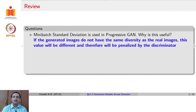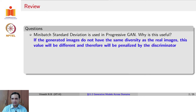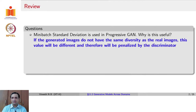The answer is: in mini-batch standard deviation, the standard deviation at each spatial location in a feature map across a mini-batch is concatenated in a later layer of a discriminator. The standard deviation gives an idea of the diversity of the images generated in a given mini-batch. If this diversity is significantly different from the diversity in the real images from a true dataset, that would incur a penalty.